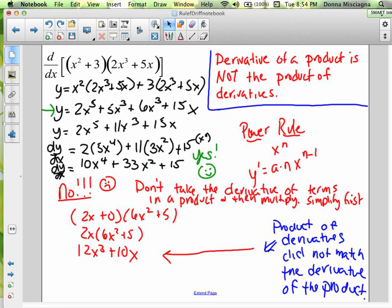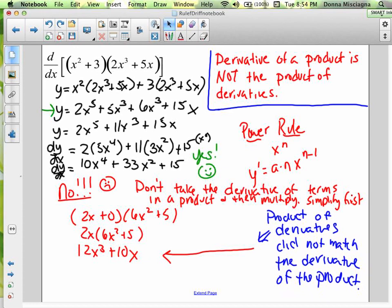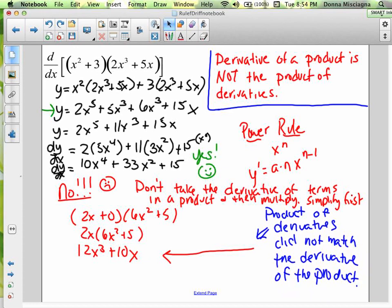So the derivative of x² would be 2x, exponent moves in front, reduce the exponent by 1. Derivative of constant is 0. Derivative of 2x³ would be 6x². Derivative of 5x is 5. So now we're going to multiply 2x times (6x² + 5) and you get 12x³ + 10x. Is 12x³ + 10x equal to 10x⁴ + 33x² + 15? No!